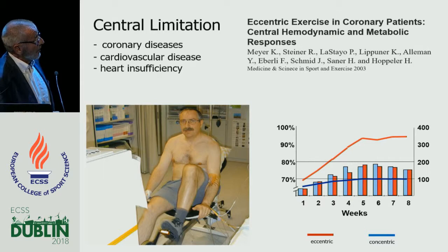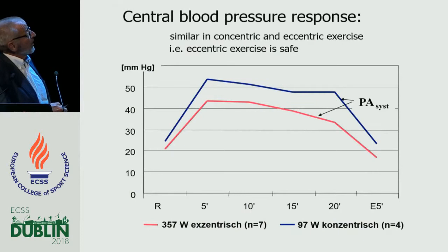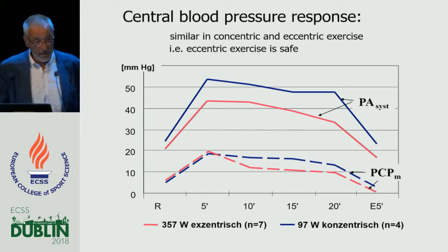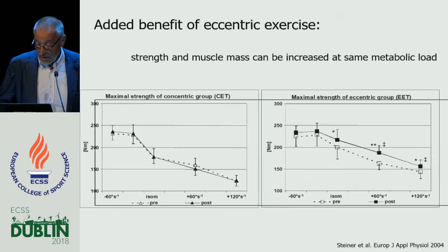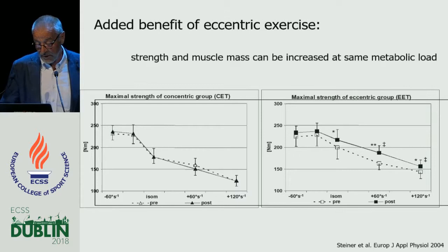What we could show is that the central blood pressure response, pulmonary artery response, and pulmonary capillary response was similar — almost identical — in both training modalities. Blood pressure was the same. So basically, from a central cardiovascular point of view, it is safe to apply these training methods. There is also an added benefit: the group that trained eccentrically gained maximal strength over a large range of different contraction velocities.